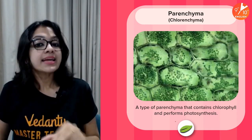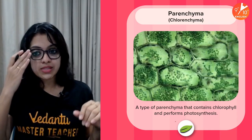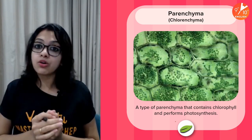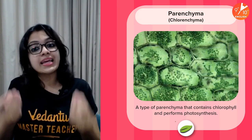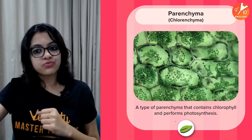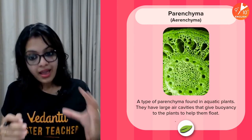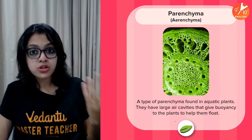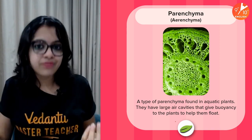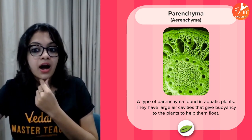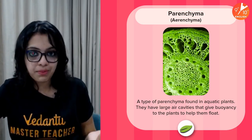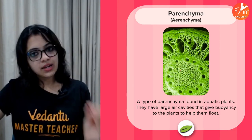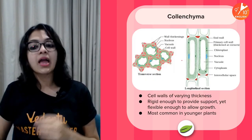Parenchyma may specialize to perform specific roles. Chlorenchyma is a type of parenchyma that contains chlorophyll and performs photosynthesis. Aerenchyma is found in aquatic plants like hydrilla and water hyacinth; they have large air cavities which give buoyancy to the plants, helping them float on the surface of water.